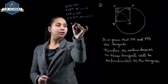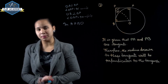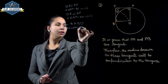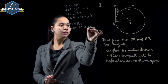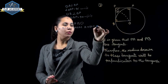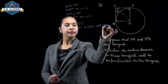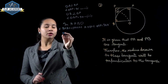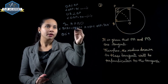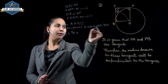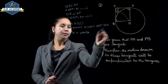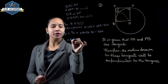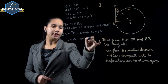In quadrilateral APBO, angle BPA plus angle PAO plus angle AOB plus angle OBP equals 360°. Substituting: 80° + 90° + angle AOB + 90° = 360°. So angle AOB equals 360° − 260° = 100°.